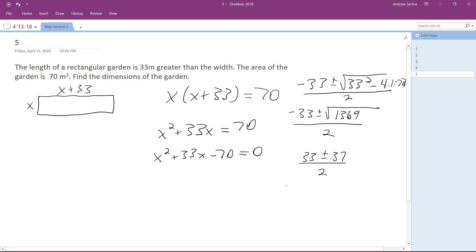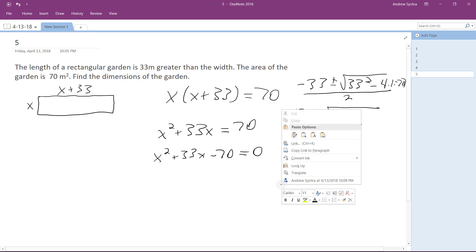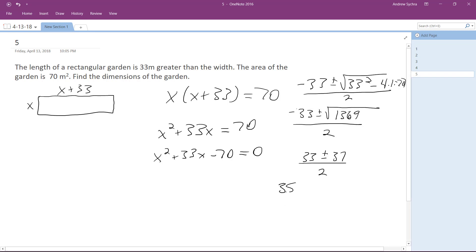So what we end up with is 35, so we end up with 35 and negative 2, I believe. Yeah.